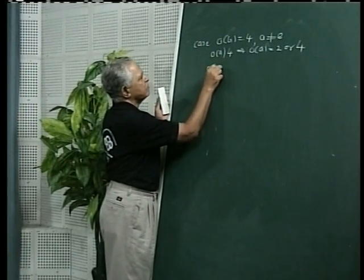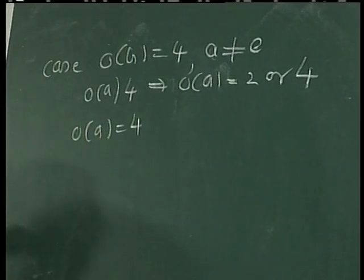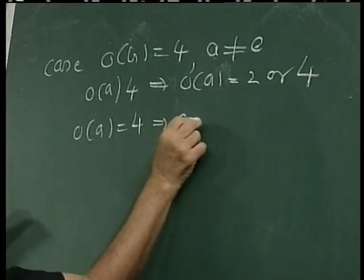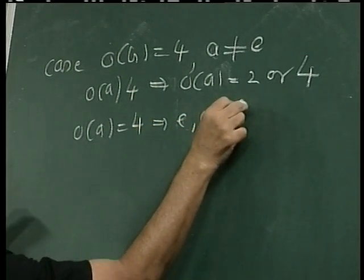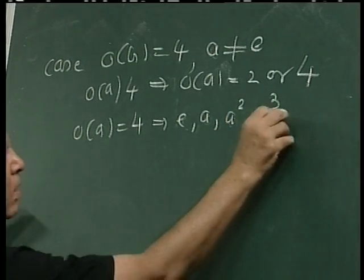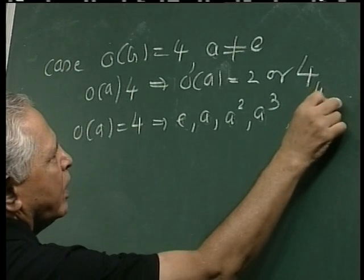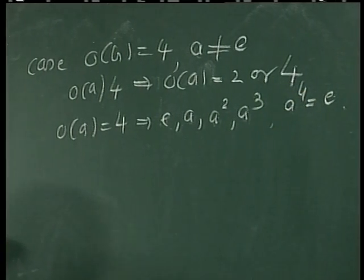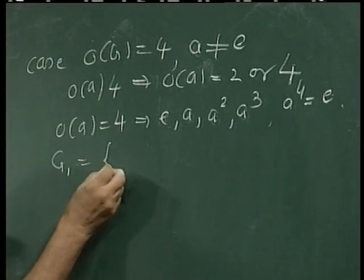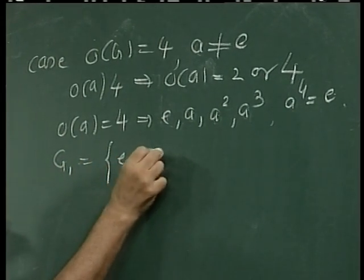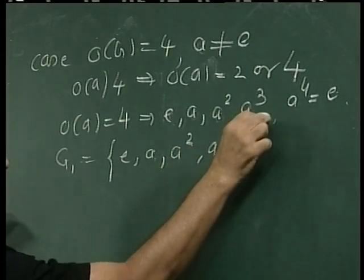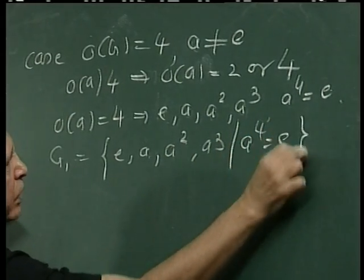First, order of a is equal to 4. If order of a is equal to 4, then these elements e, a, a-squared, a-cubed are 4 distinct elements, and we have a raised to 4 equal to e. That means in this case our group G1 can be written as {e, a, a-squared, a-cubed} and a raised to 4 equals e.